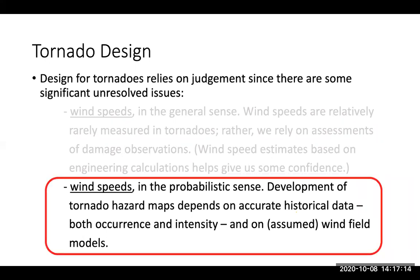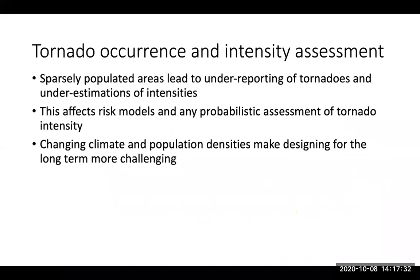That's what I want to focus on for the rest of the talk. I think it's one of the areas where we can do quite a bit more in wind engineering, and I'd like to see more efforts around the world to capture some of these things so that we can start to understand how tornadoes are occurring and perhaps changing globally. Sparsely populated areas lead to underreporting of tornadoes and probably underestimates of their intensities.